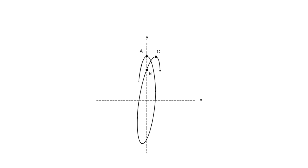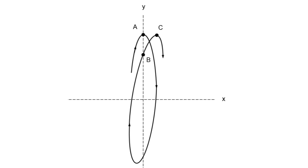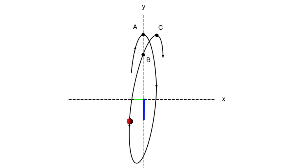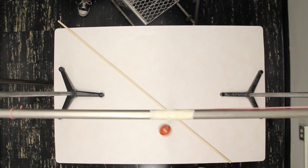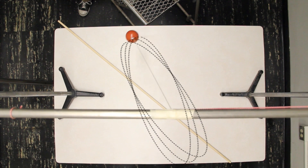Now let's return to the top view of the spherical pendulum and think of its motion as the sum of x and y motions. Let's start at point A. Consider one cycle of the x motion. The y motion will not yet have completed its cycle because the period is greater, so the mass will be at some point B. At a later time, the cycle of the y motion will be completed at C. The ellipse thus rotates and will continue to do so. This is precession.